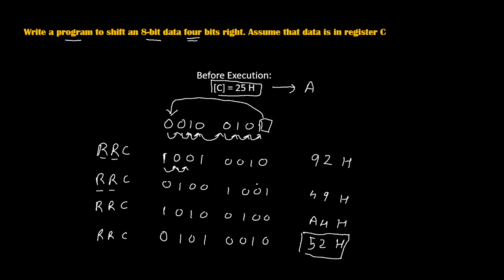The conclusion is that when we rotate any register 4 times, we get swapping of nibbles. 25H will become 52H — 5 comes at the place of 2 and 2 comes at the place of 5. A nibble means a collection of 4 bits, so the upper nibble 0010 and lower nibble 0101 get swapped.